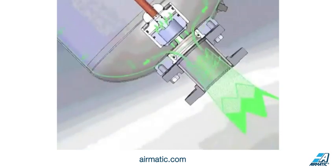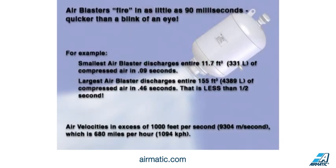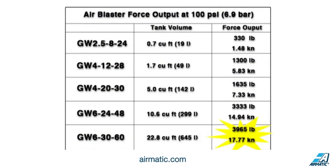Depending on the tank size, this whole process takes as little as 90 milliseconds — less than half the time it takes you to blink your eyes. For example, at 100 psi, our smallest air blaster discharges the entire 11.7 cubic feet of compressed air in just 0.09 seconds, while our largest air blaster discharges 155 cubic feet of air in 0.46 seconds — less than half a second. With air velocities in excess of 1,000 feet per second, which is 680 miles per hour, our largest air blaster creates approximately 4,000 pounds of force.